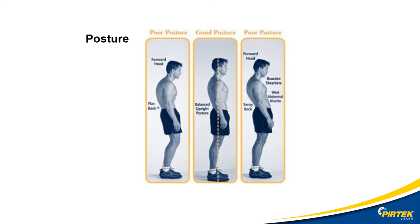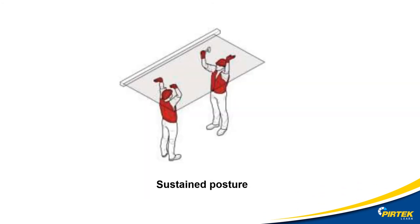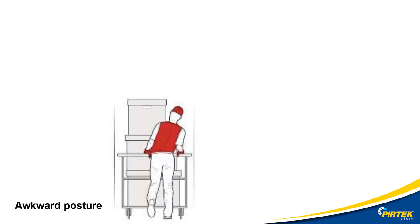Posture. Poor postures can exert unwanted forces on particularly vulnerable parts of a person's body. Sustained posture — where part or the whole body is kept in the same position for a prolonged period. Some examples: continually standing on one leg, holding something up with one arm in the same position for a long time, or prolonged sitting at a workstation without moving. Awkward posture — where any part of the body is in an uncomfortable or unnatural position — for example, squatting while servicing equipment, working with your arms overhead, bending over a desk, or looking around the side of a trolley while pushing it along a walkway.